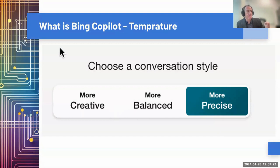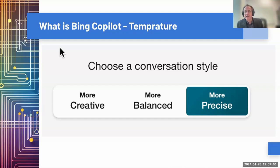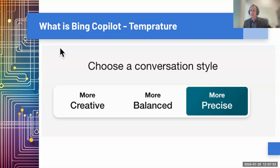What I've been finding is that the balanced setting gets me the worst answers. For example, I tried using computer vision with balanced — I took a picture of a badminton racket, said 'what is this,' and it said it was a tennis racket and gave me the rules of tennis. It kind of goes off like a chat buddy or a modern Clippy. I tend to do most of my prompting in precise or creative modes, trying to get to ChatGPT-4 and avoid the Microsoft middleware.